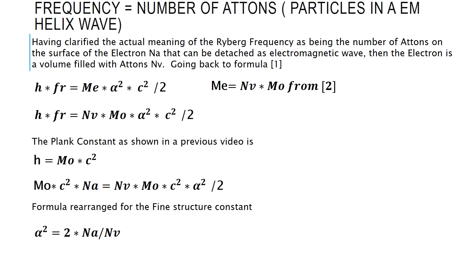Going back to formula one, we can substitute the mass of the electron with the number of atoms in the electron times the mass of the atom.